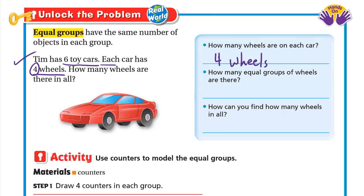How many equal groups of wheels are there? We have six toy cars, so that means six groups. The question is: how can you find how many wheels in all? In each car there are four wheels and we have six cars, so we will count four six times.